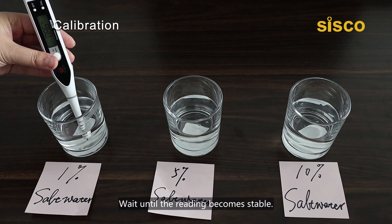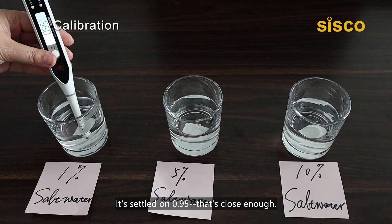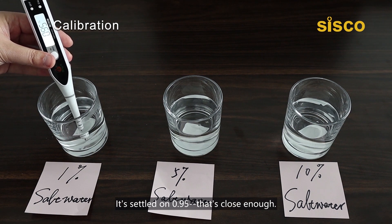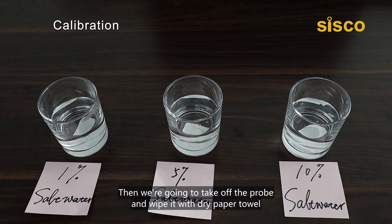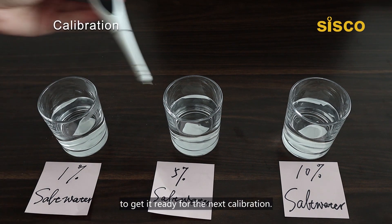Wait until the reading becomes stable. It's settled on 0.95, that's close enough. Then we're going to take off the probe and wipe it with dry paper towel to get ready for the next calibration.